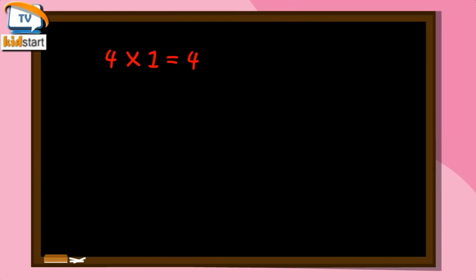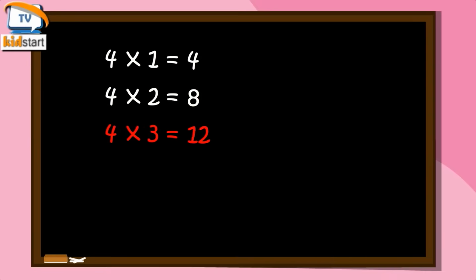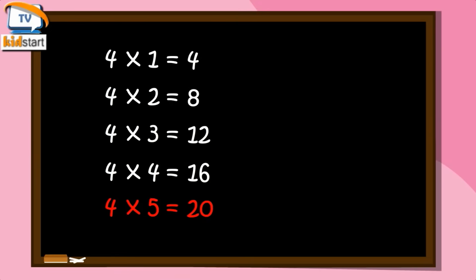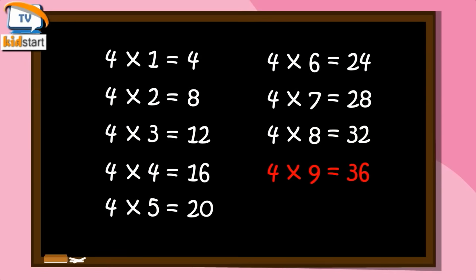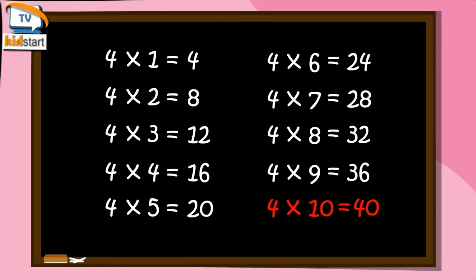4 ones are 4. 4 twos are 8. 4 threes are 12. 4 fours are 16. 4 fives are 20. 4 sixes are 24. 4 sevens are 28. 4 eights are 32. 4 nines are 36. 4 tens are 40.